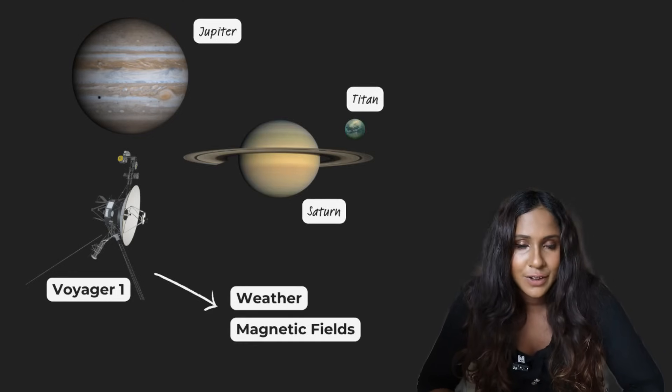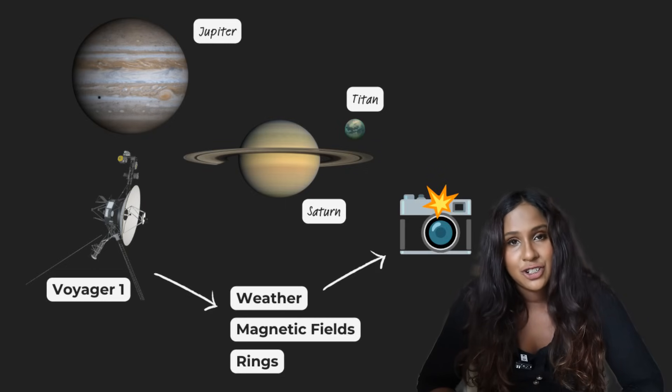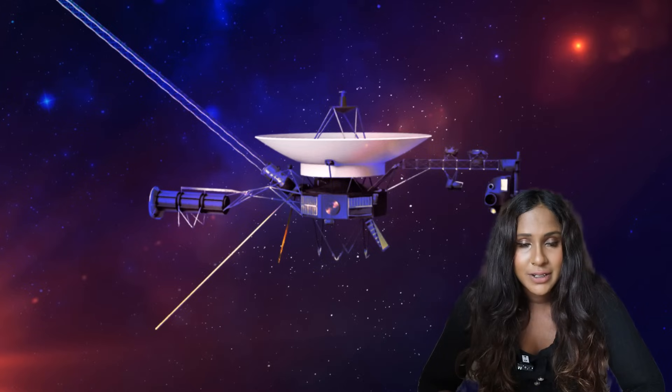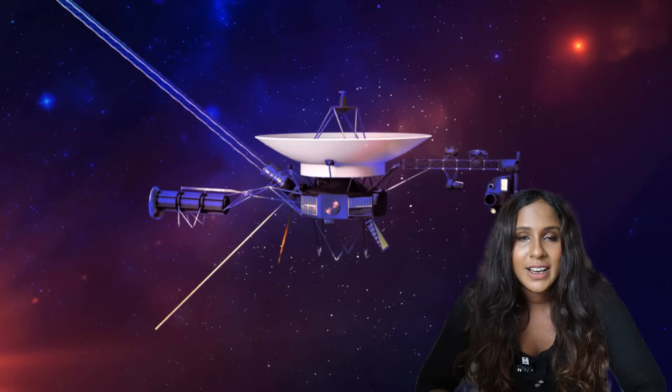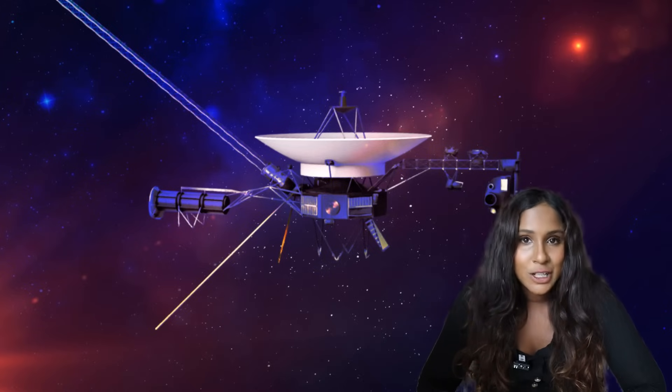It studied their weather, magnetic fields, and rings, and sent back stunning images that changed how we understood our solar system. Voyager did an excellent job feeding us information as it journeyed through space. But in late 2023, something went wrong.